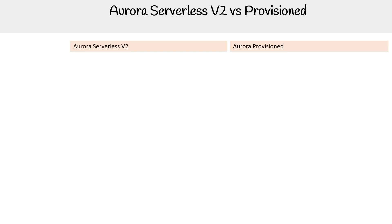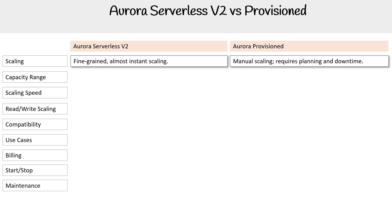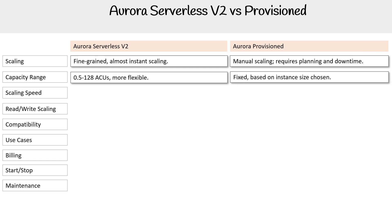Let's compare serverless version two versus provisioned, so we fully understand the difference between these two. For Aurora Serverless v2, we have fine-grained, almost instant scaling. For Aurora Provisioned, you are manually scaling — you must plan for downtime. Capacity range is between 0.5 to 128 ACUs, so it's very flexible. For Aurora Provisioned, it's fixed based on the instance size you choose.